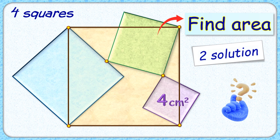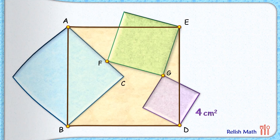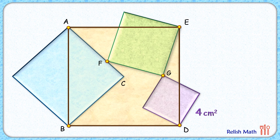Welcome everyone to this interesting question where given to us are 4 squares as shown in the figure. The area of this purple square is 4 cm². With this limited data we have to find the area of this green square. We will solve the same question in two ways: a formal approach using mathematical formulas, and a logical approach solving the same question without any formula. Let's check this simple and elegant solution.